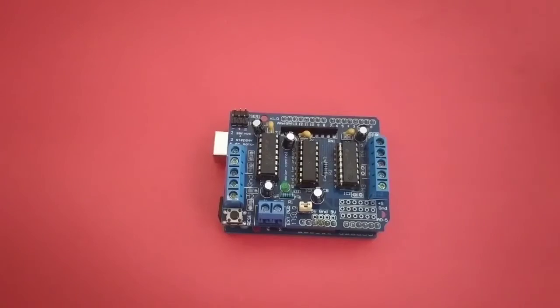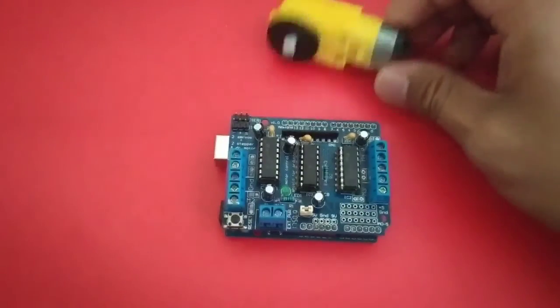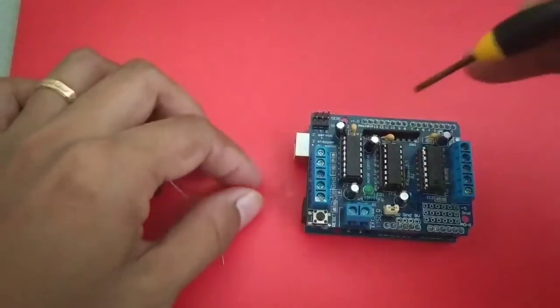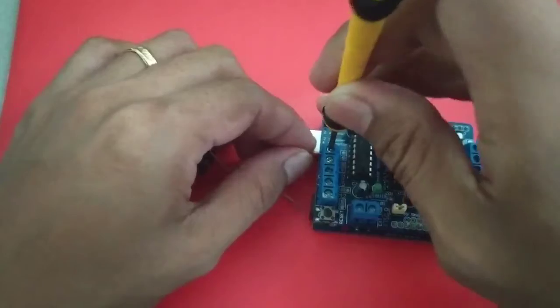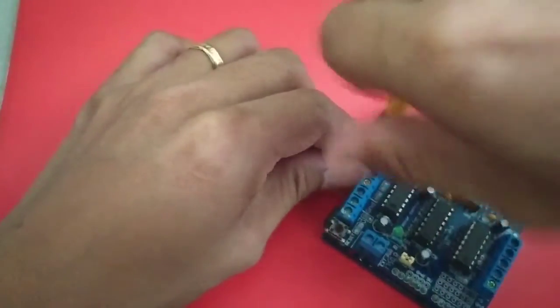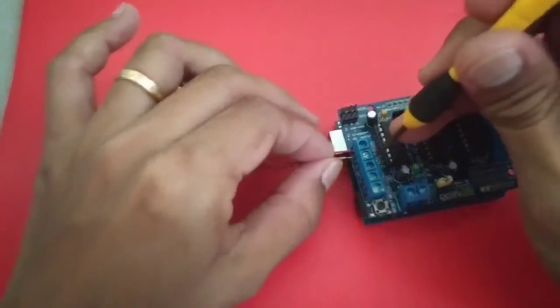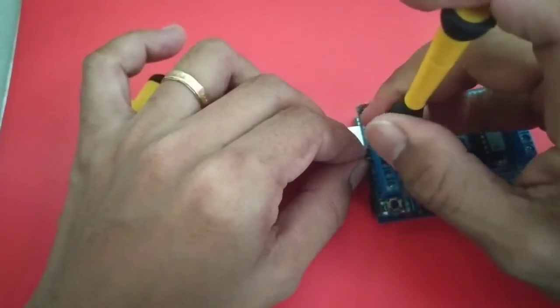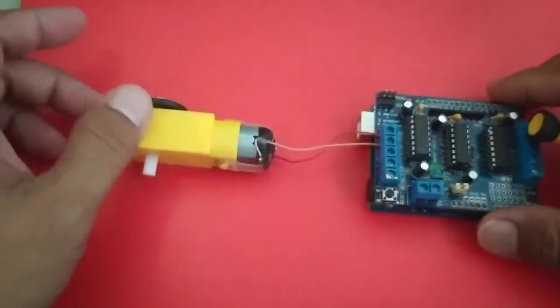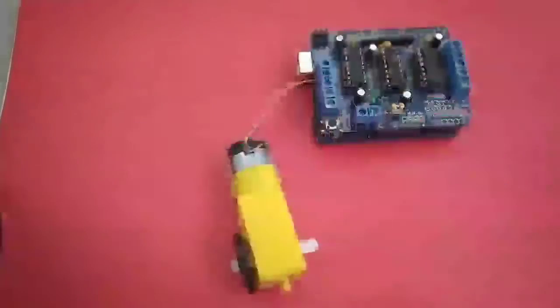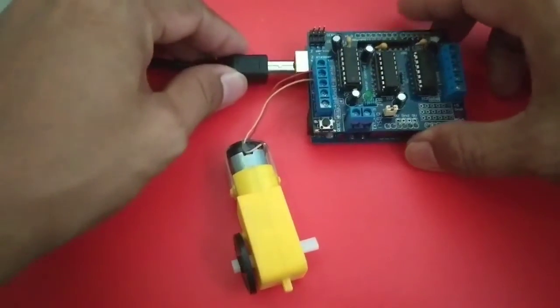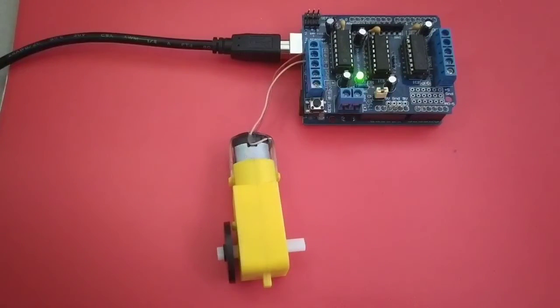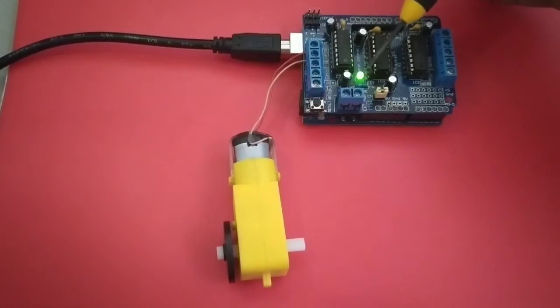We will also need a DC motor for this demonstration. Next, we will connect our DC motor to the terminal block M1. Now it's okay. Next, we will connect the USB to our Arduino for power and for programming, uploading the sketch. And as you can see, the LED power indicator is now on.